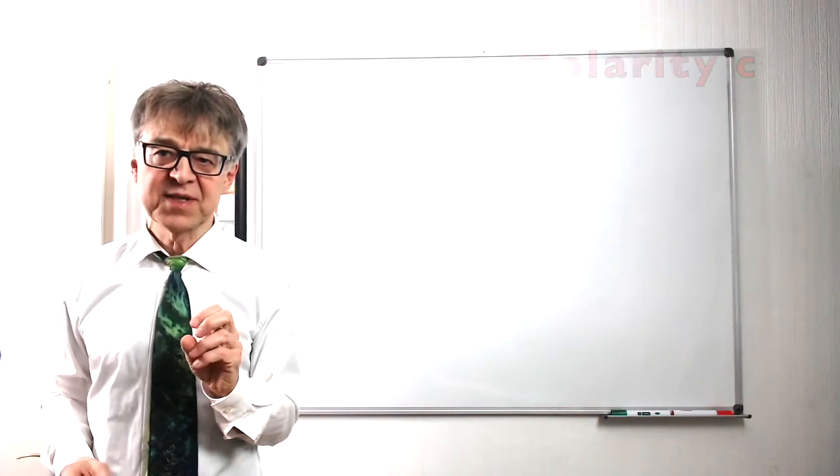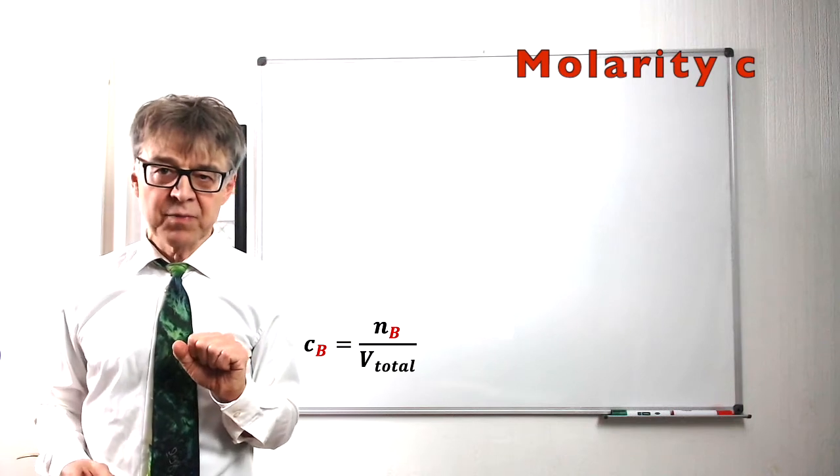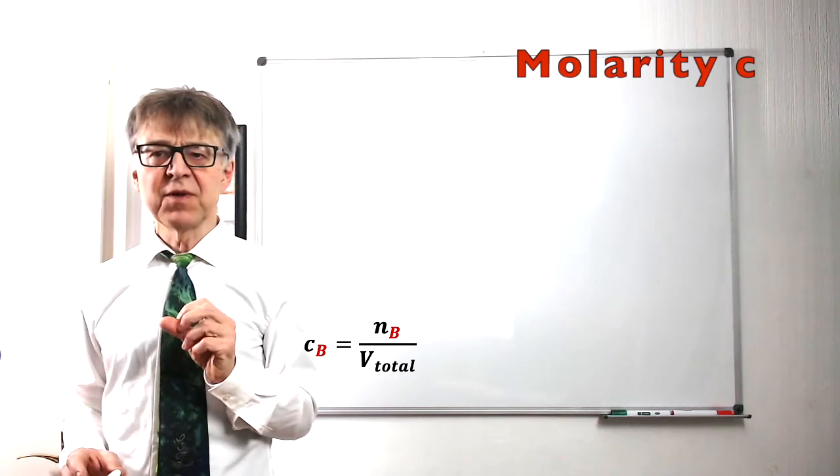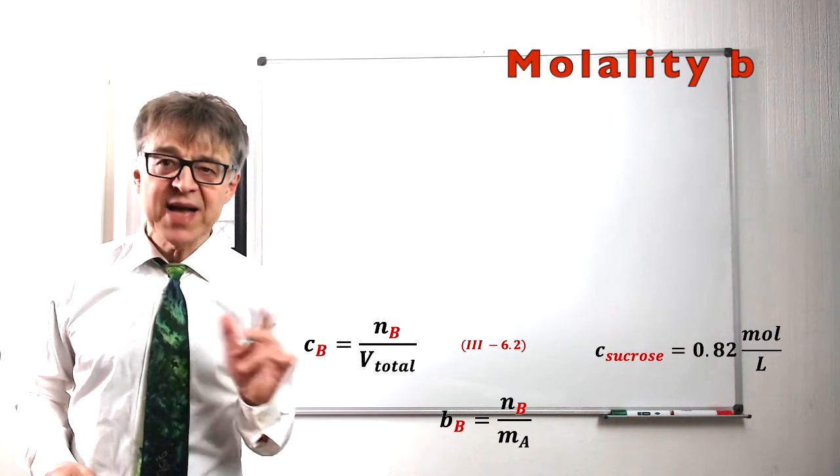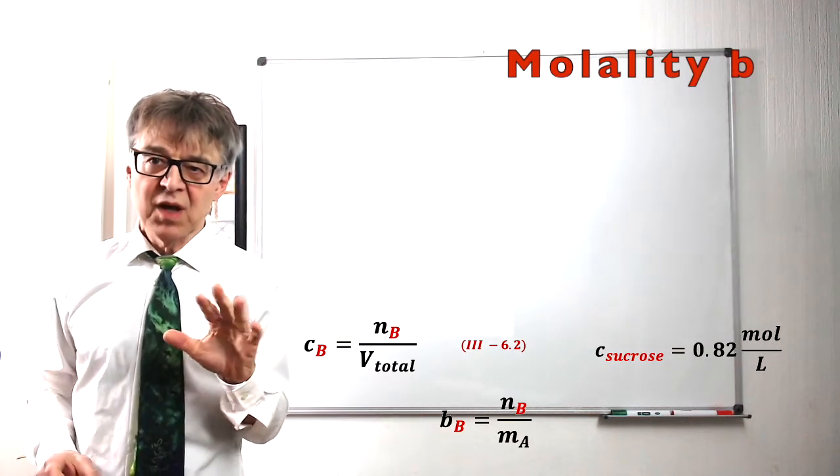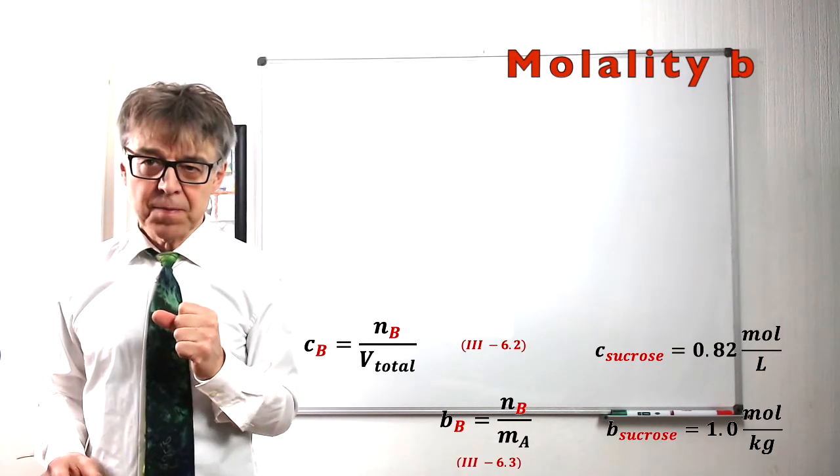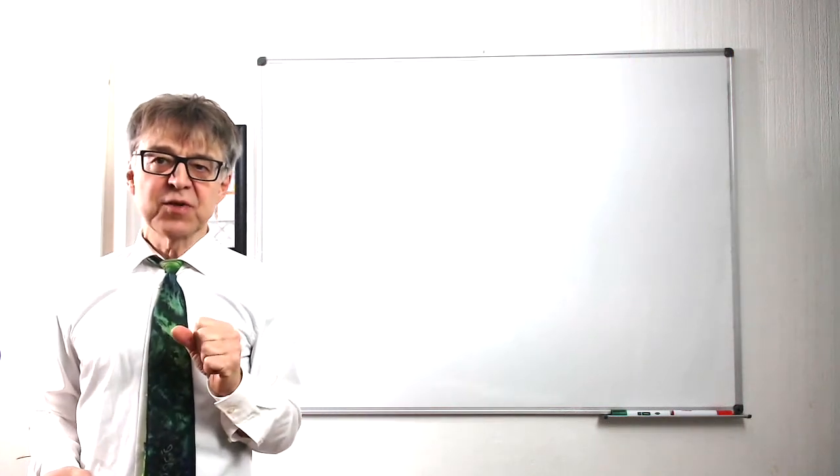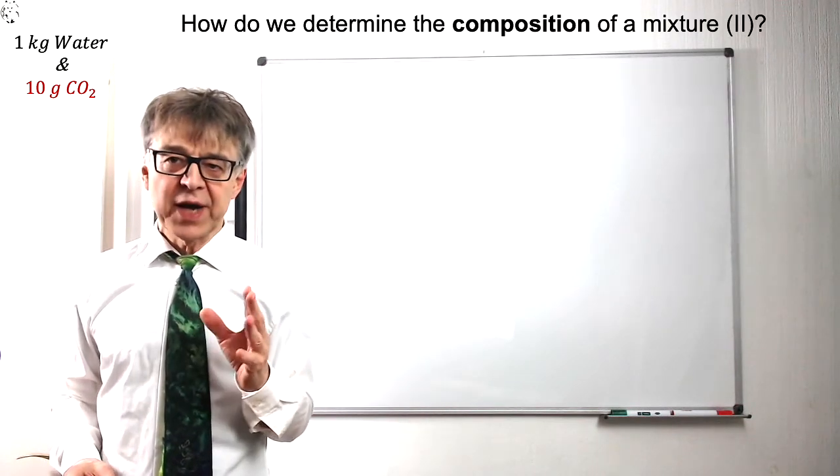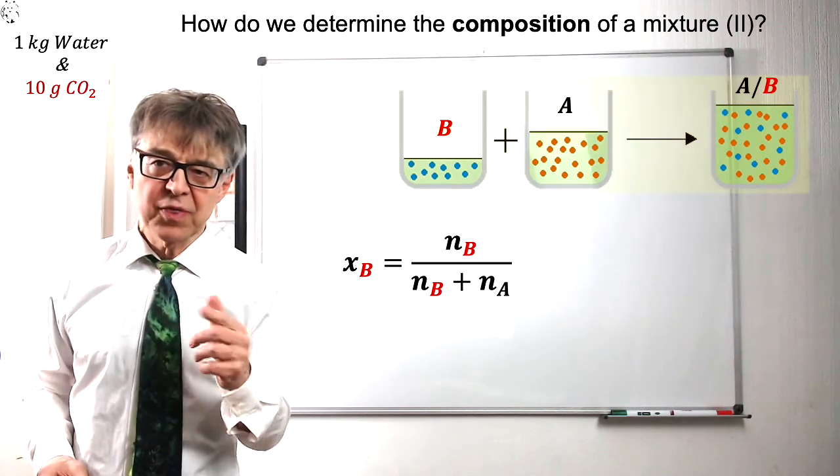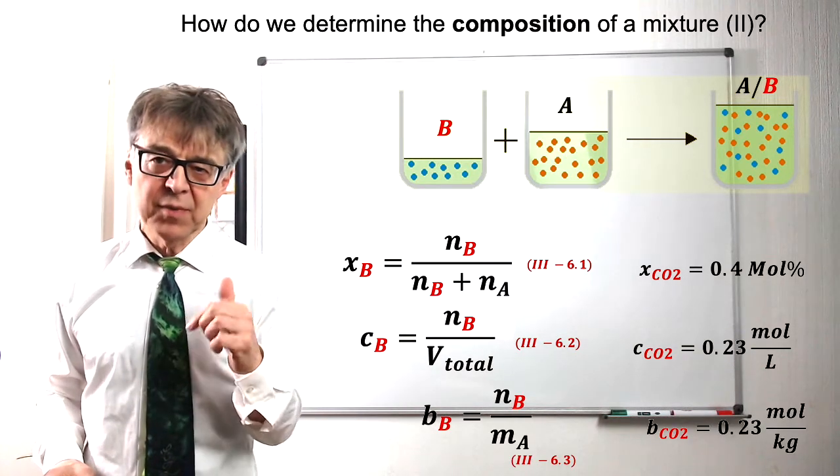Molarity is also popular to specify concentration. We have to divide the amount of the solute by the total volume. Molarity should not be confused with molality. We calculate molality by dividing the amount of the solute by the mass of the solvent A. Molarity and molality are approximately the same for very diluted solutions. We get such a diluted solution if we dissolve 10 grams of CO₂ in one kilogram of water. We get a molarity of 0.23 moles per liter and a molality of 0.23 moles per kilogram.